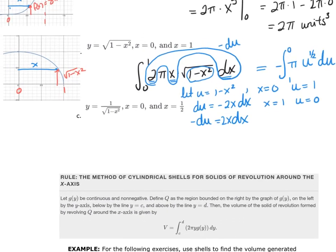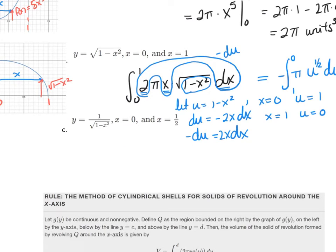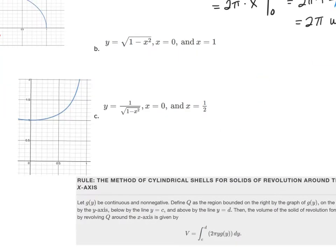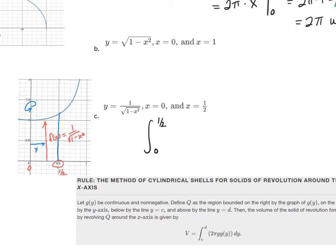For our next example, the graph of y = 1/√(1 - x²) is shown, integrating between 0 and 1/2, revolving around the y-axis. The radius at any given time is x, and the height is 1/√(1 - x²). So the integral is from 0 to 1/2 of 2π times x times 1/√(1 - x²) dx.